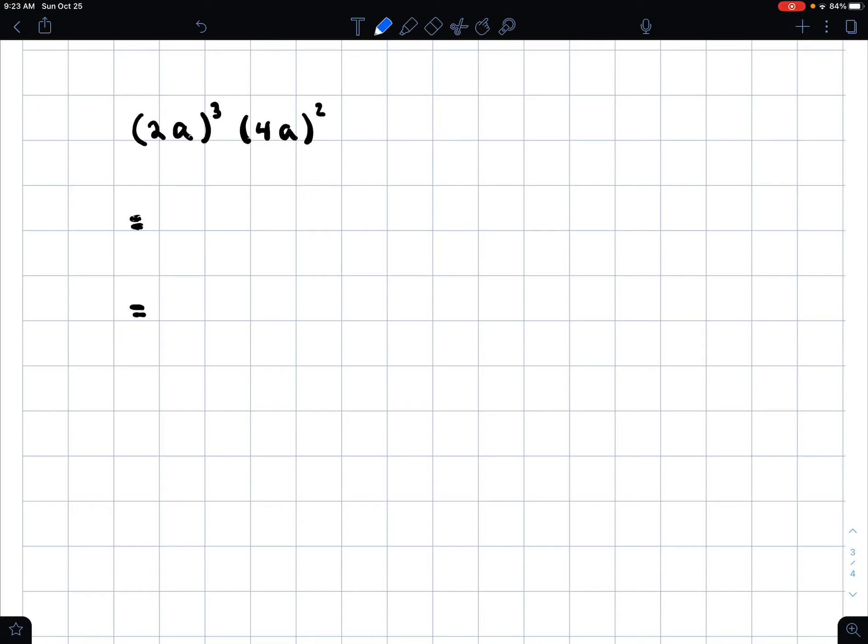Because BEDMAS says I need to do brackets first. So 2 to the power of 3, that's 8, right? 2 times 2 times 2—it's not 6, it's 8. And a to the power of 3 is just a to the power of 3. That gets multiplied by...